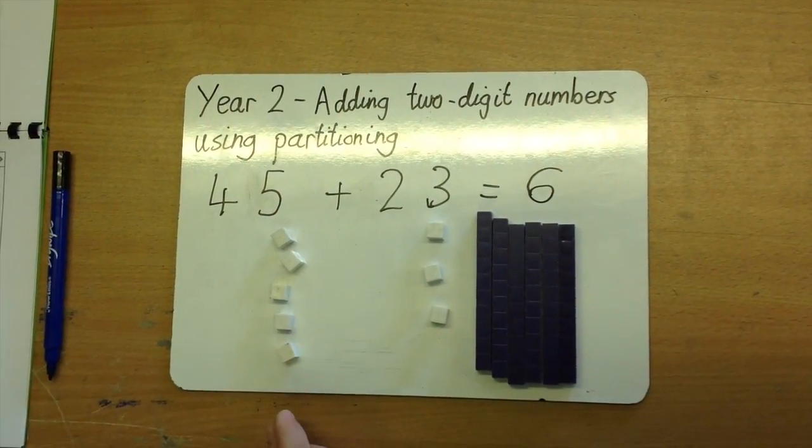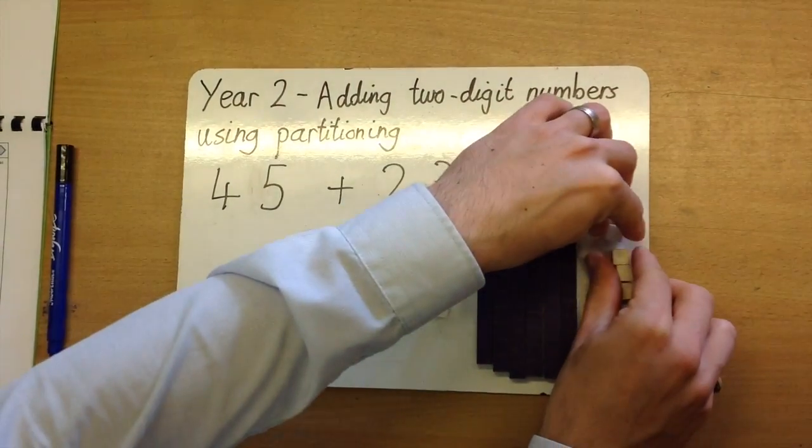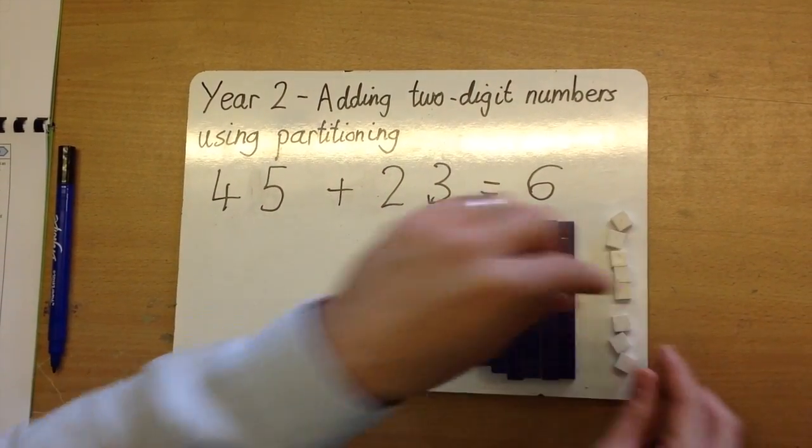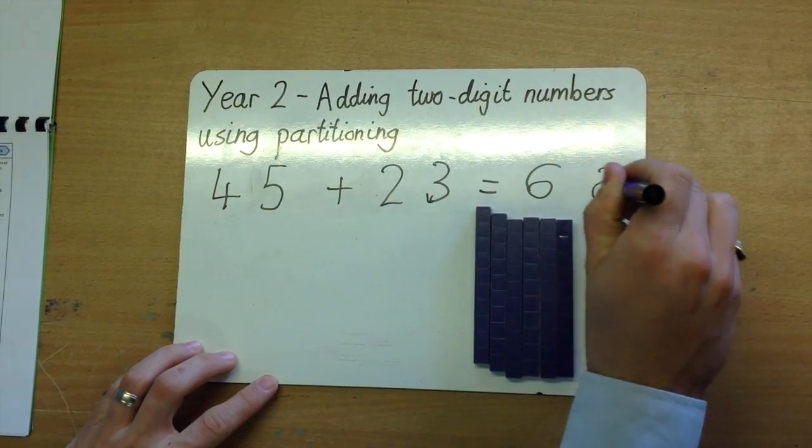Then we're going to add the units. 5 units add 3 units. 5 add 3 is 8. 68.